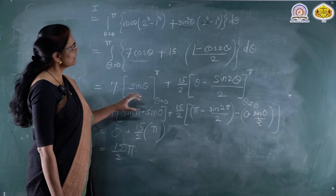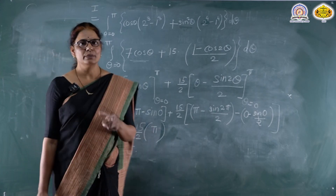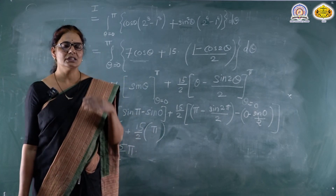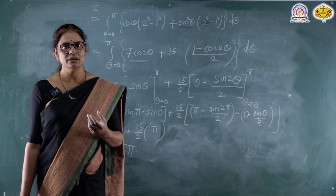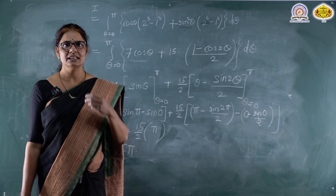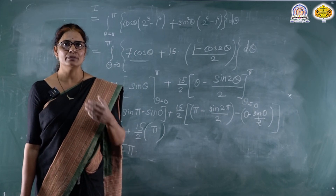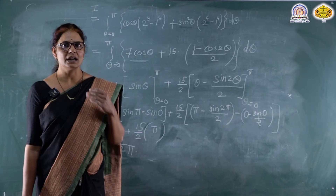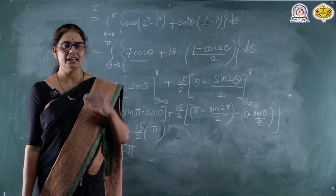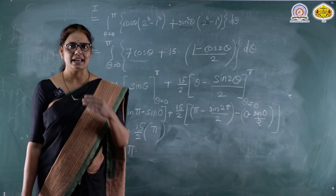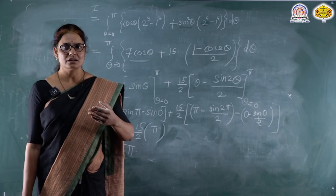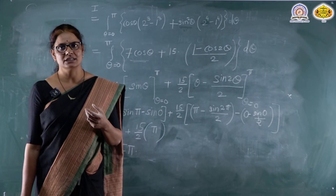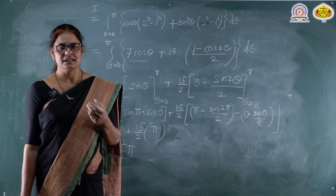The method of changing to polar coordinates in double integrals is much easier compared to directly solving using Cartesian coordinates, especially for special regions like circles or the region between two concentric circles.